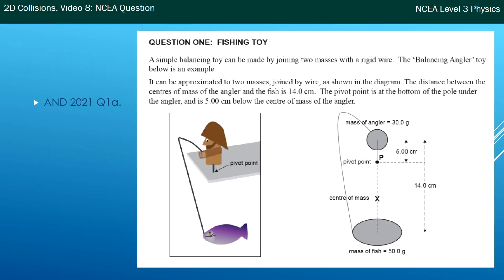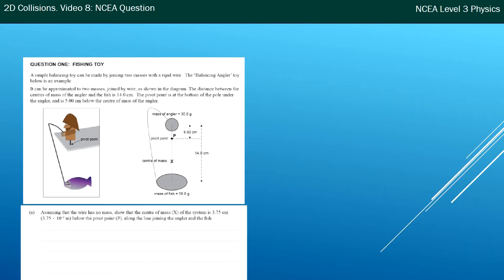Now I want to do a centre of mass question as well. This one was particularly hard because it gives you lots of bits of information. There's a balancing toy — two masses joined by a rigid wire. The distance between the centre of mass of the angler and the fish is 14 cm, so the total distance between them is 14 cm. The pivot point is at the bottom of the pole, five centimetres below the angler. The question asks: show that the centre of mass is 3.75 centimetres below the pivot point.